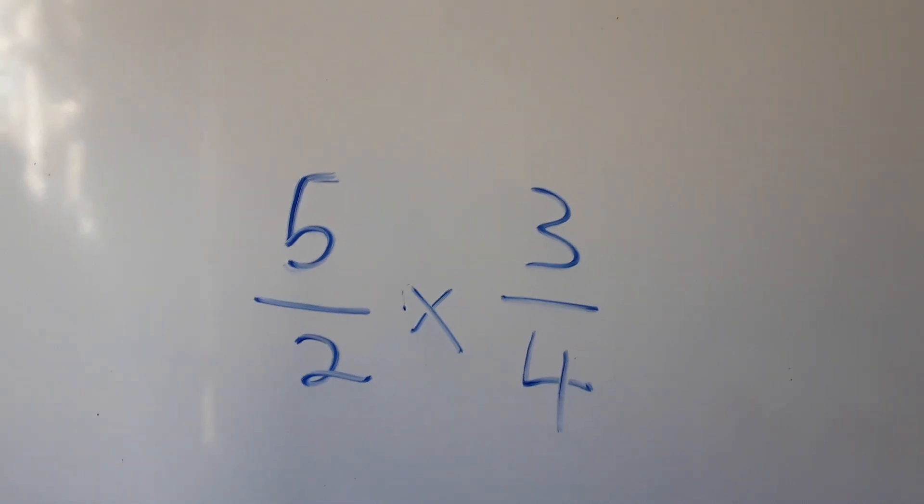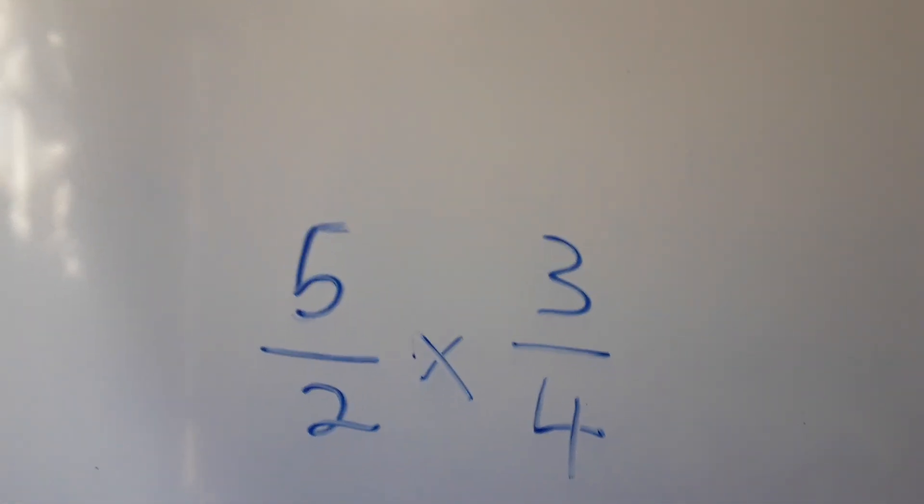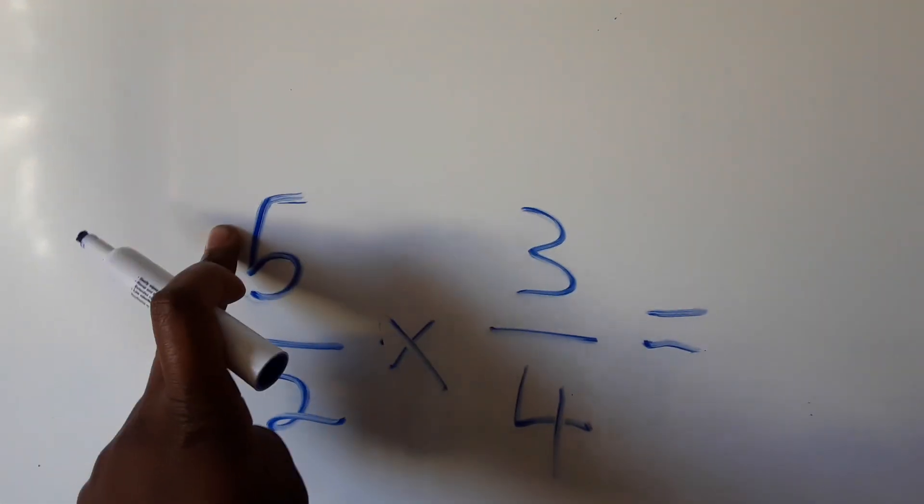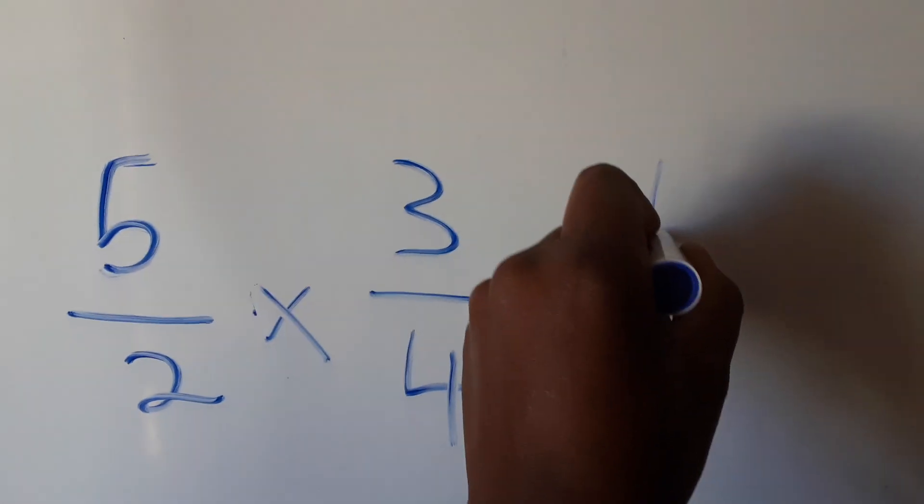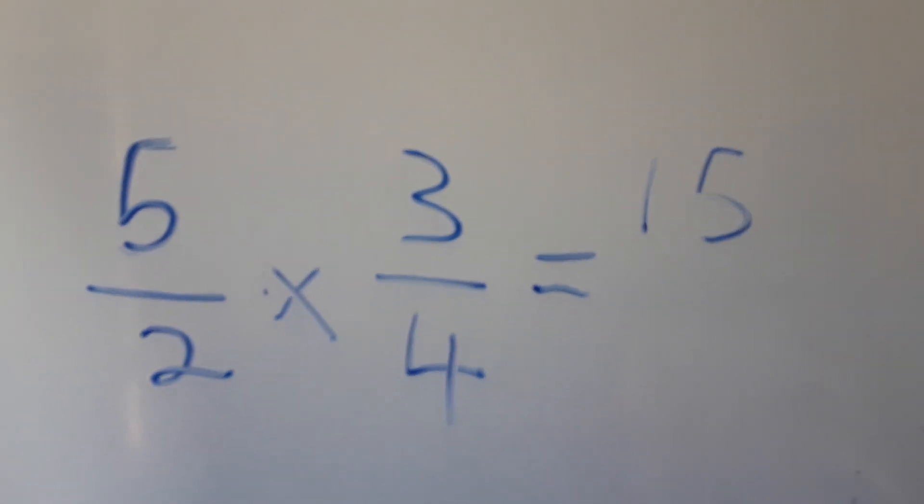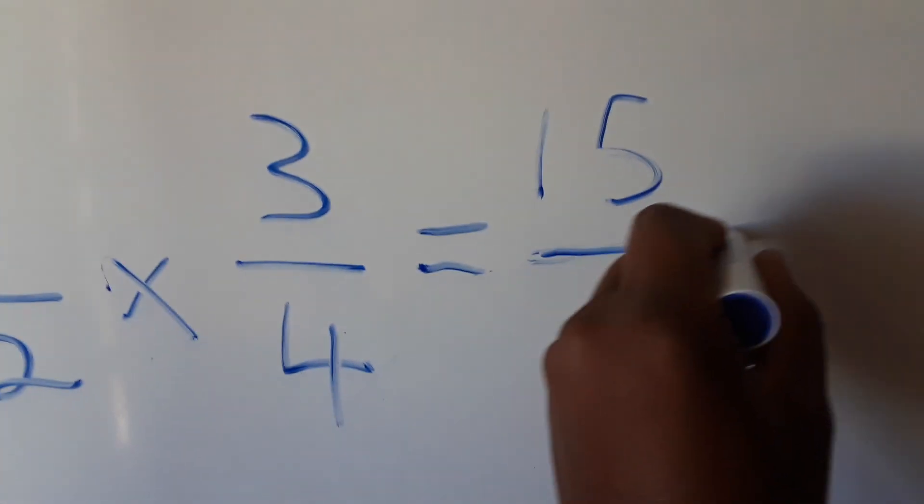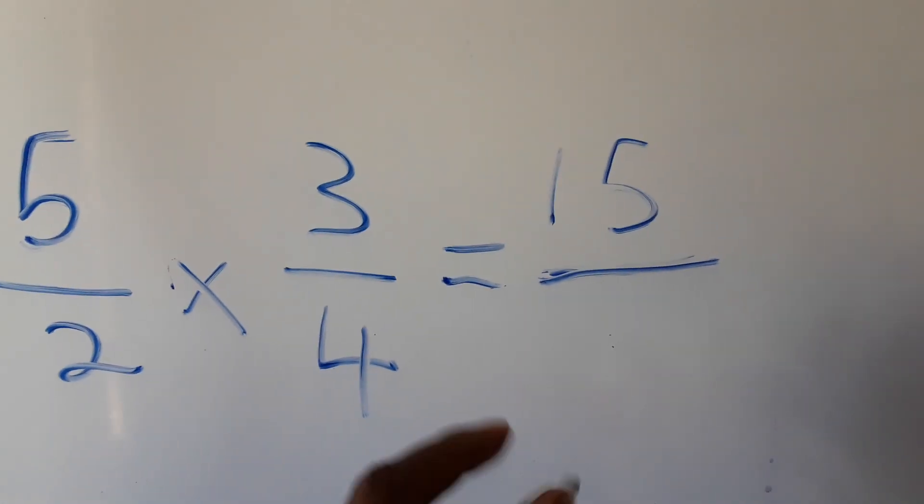This is how we do it. We say 5 times 3, which gives us 15. Then it's divided by 2 times 4, which gives us 8.